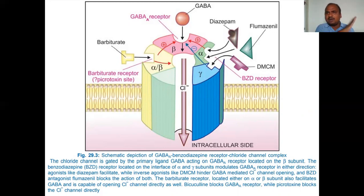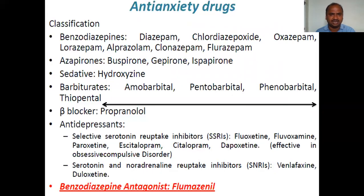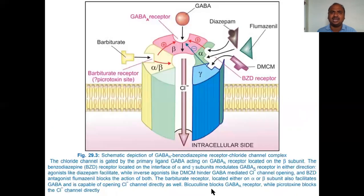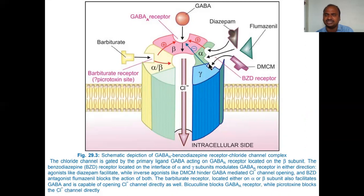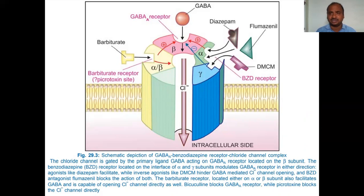Flumazenil is the benzodiazepine antagonist. When flumazenil goes and attaches to the benzodiazepine receptor site, it completely blocks that site. The endogenous ligand cannot go and sit there; benzodiazepines also cannot go and sit there. That is why flumazenil works as an antagonist specifically for benzodiazepines — not for barbiturates.